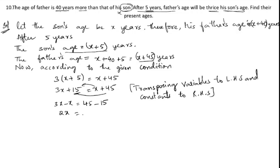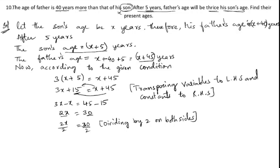Subtracting 15 from 45 gives 30. To get rid of the 2, we divide both sides by 2: 2x divided by 2 equals 30 divided by 2. We can cancel the twos, and 15 times 2 is 30, so x equals 15.